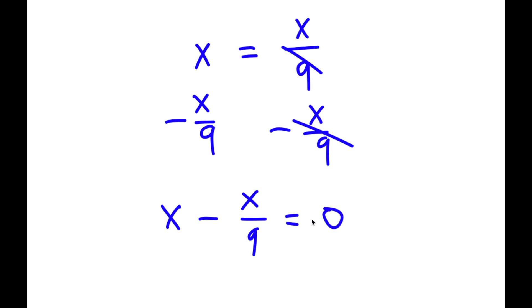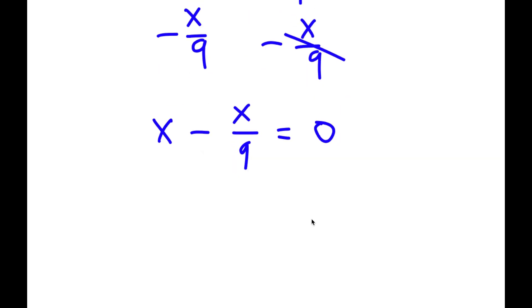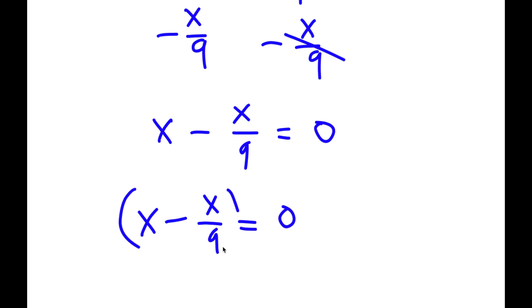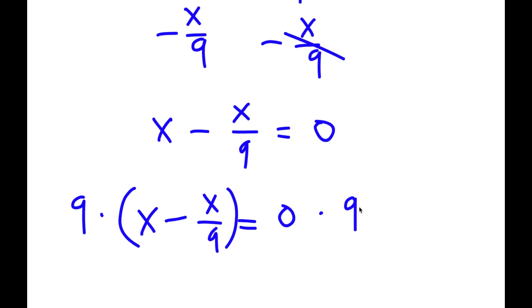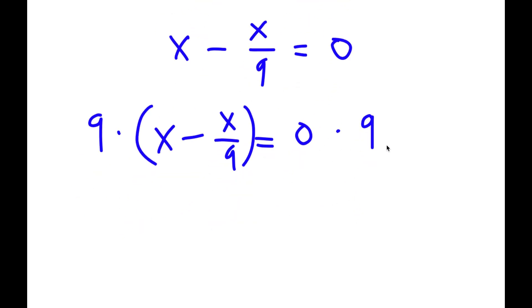Now, I'm going to multiply both sides by 9. So now I have x minus x over 9 times 9 is equal to 0 times 9. Everyone knows that 0 times any number is simply equal to 0, so 0 times 9 is simply equal to 0.